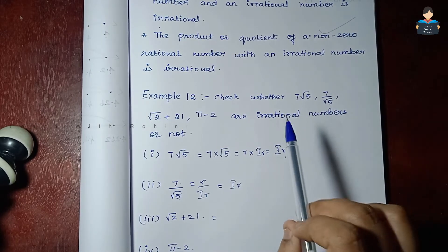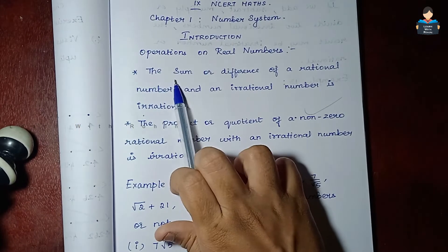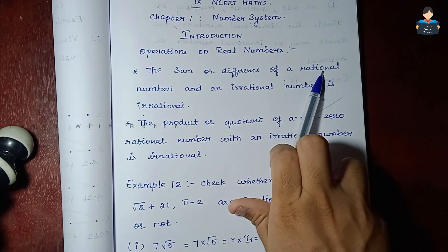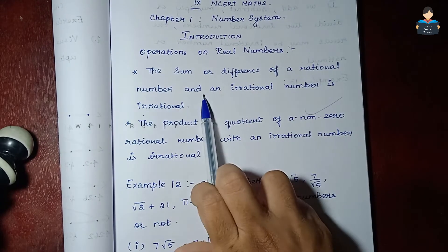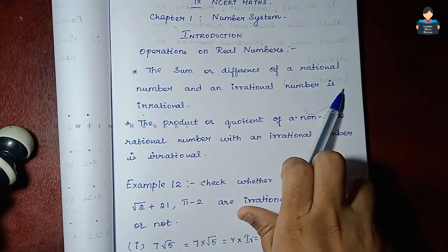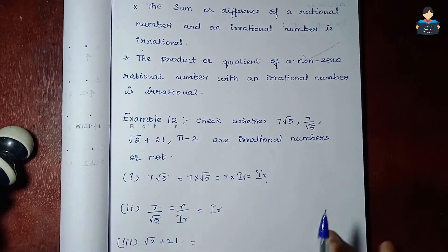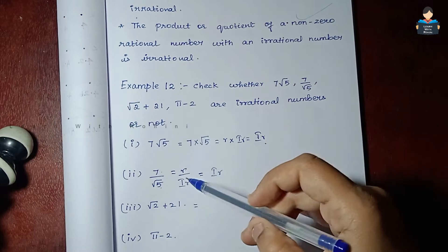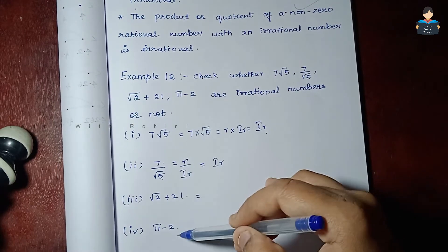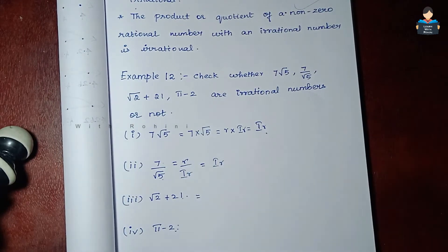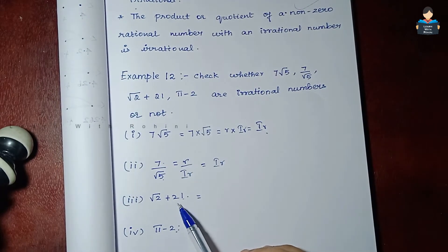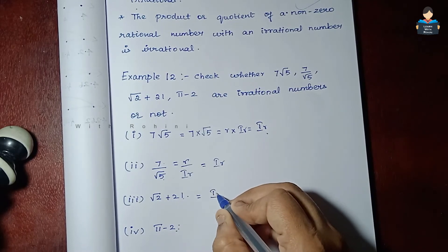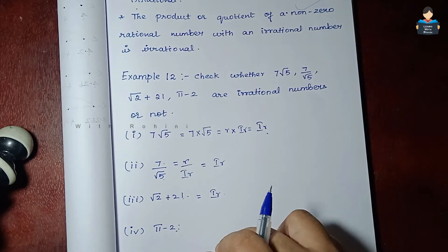The first statement: the sum or difference of a rational number and an irrational number is irrational. So in the next subdivision, √2 + 21 — √2 is irrational.